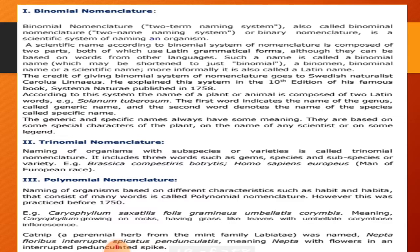It is called trinomial nomenclature when it includes three words: genus, species, and subspecies or variety. For example, Homo sapiens europaeus — the human of European race — is an example of trinomial nomenclature. Homo sapiens is the generic part and sapiens is the specific part.